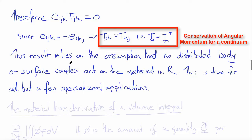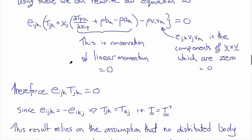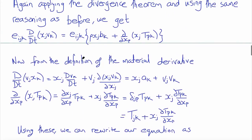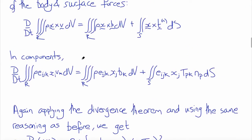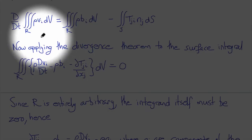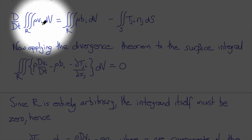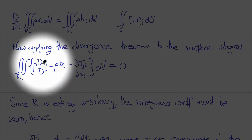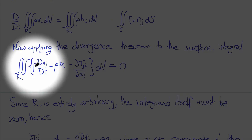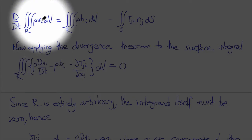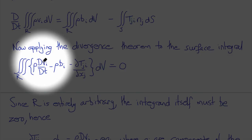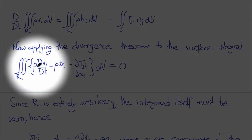This completes our derivations, but if you were observant you may have noticed that I did something that wasn't completely legitimate. You'll notice that the material time derivative of the volume integral of rho times V_i was substituted with the volume integral of rho times the material derivative of V. That would imply that rho is constant in time, but in fact we haven't required that, and in general that's not the case. This is actually a result that comes from conservation of mass.